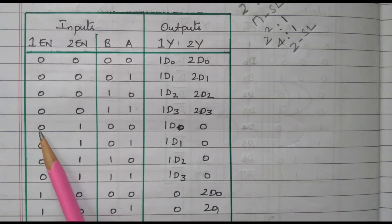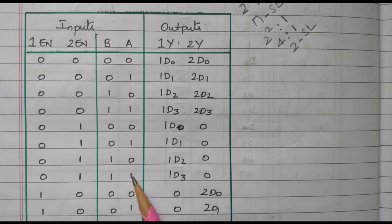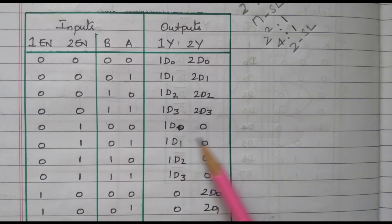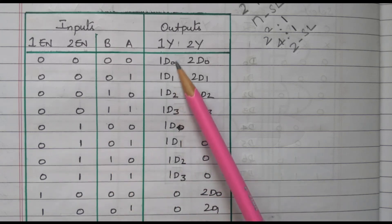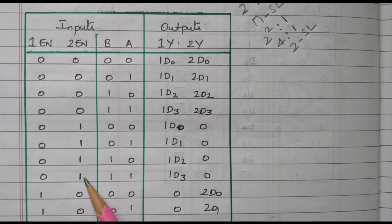Now the second set of data case: the first multiplexer is enabled and the second multiplexer is not enabled — 1 means not enabled. Again there are four combinations available, but the output of the second multiplexer is 0. With 00 we get 1D0, 01 gives 1D1, 10 gives 1D2, and 11 gives 1D3 at the first output. The second multiplexer output is 0 because it is not enabled.